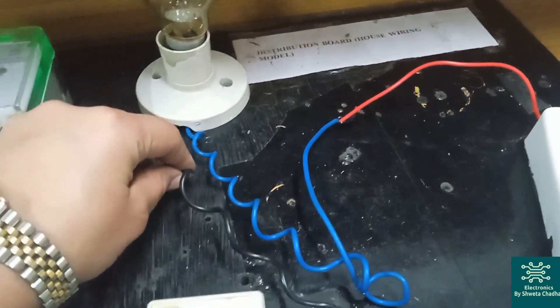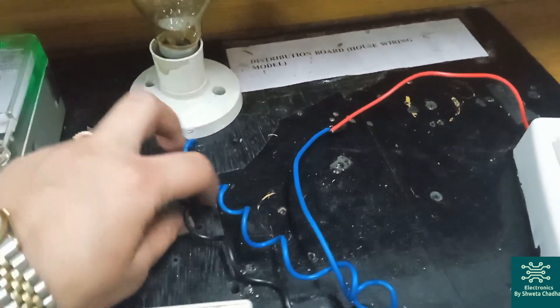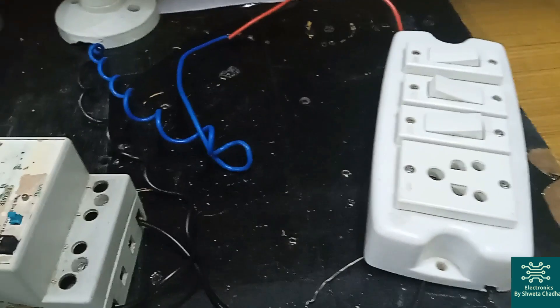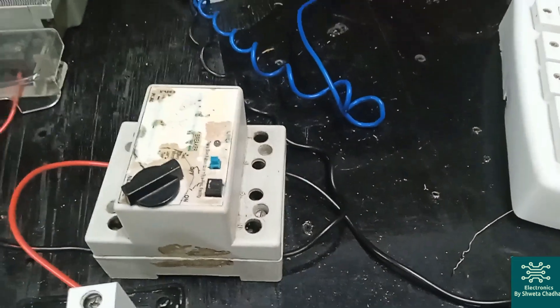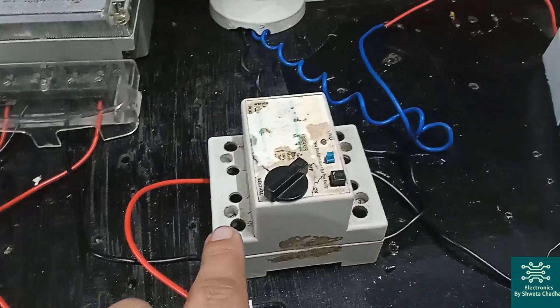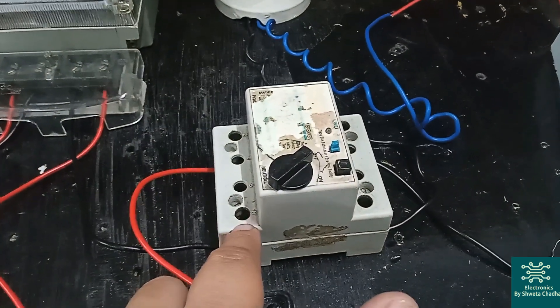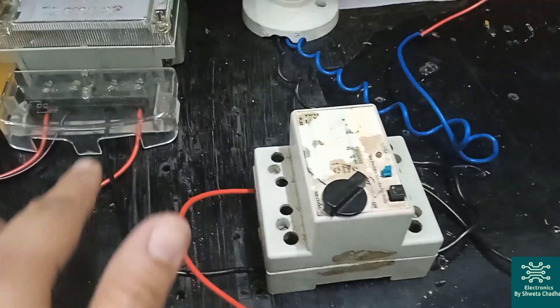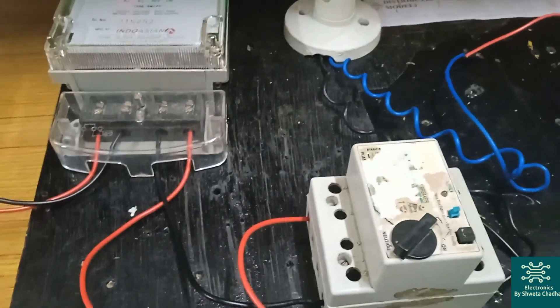Now, from the bulb, our neutral wire will start. So first, neutral wire will be connected with the neutral of ELCB. So you can have a look over here, the N terminal, the output of N terminal. Again, the neutral wire of ELCB is now connected with the neutral of energy meter.